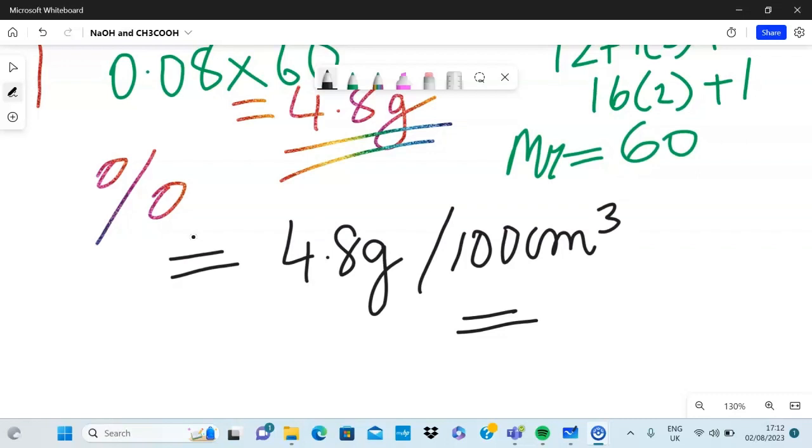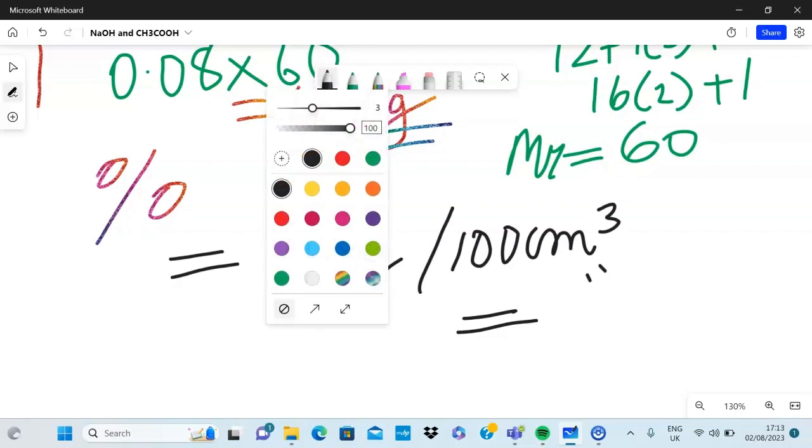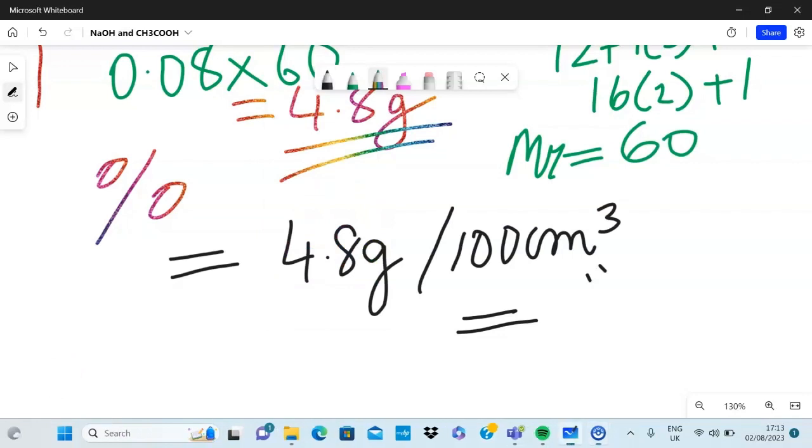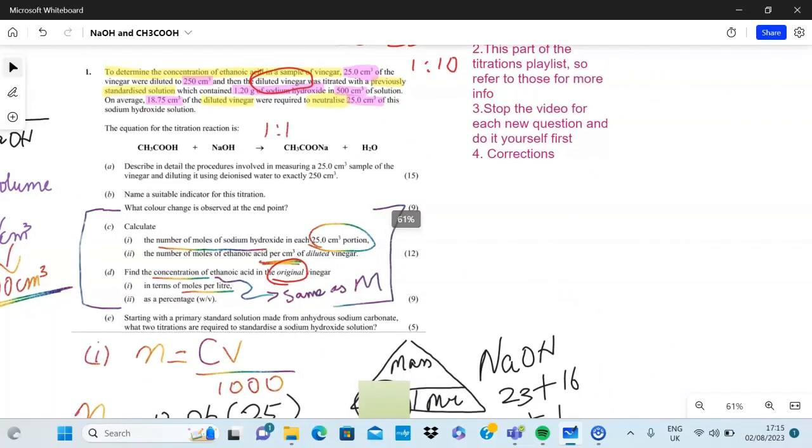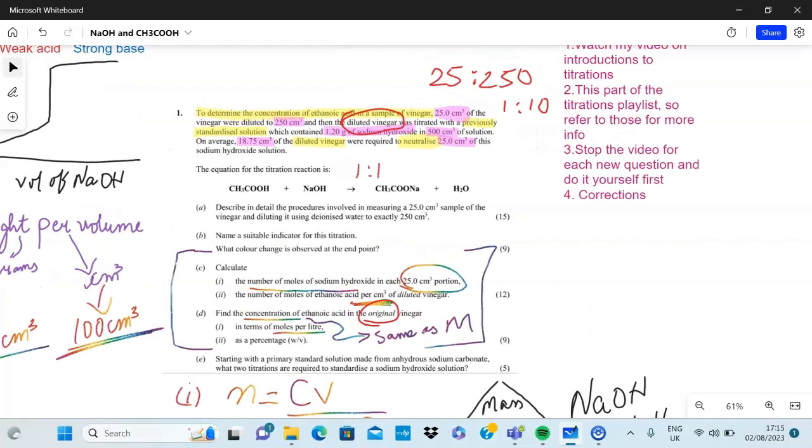You know the trick behind weight per volume now, and that's it. All credits goes to the state examinations commission for this question. I would say personally this is as hard as it would get unless random stuff like the graphs would come up. Honestly after my exam in 2023, expect the unexpected. As a bonus I can do this one - you would know how to do this question from my first video. Starting with the primary standard solution made from anhydrous sodium carbonate, what two titrations are required to standardize the sodium hydroxide? The answer would be anhydrous sodium carbonate and hydrochloric acid, and then using that hydrochloric acid and sodium hydroxide would give you the concentration of NaOH, which is the same as standardizing it.